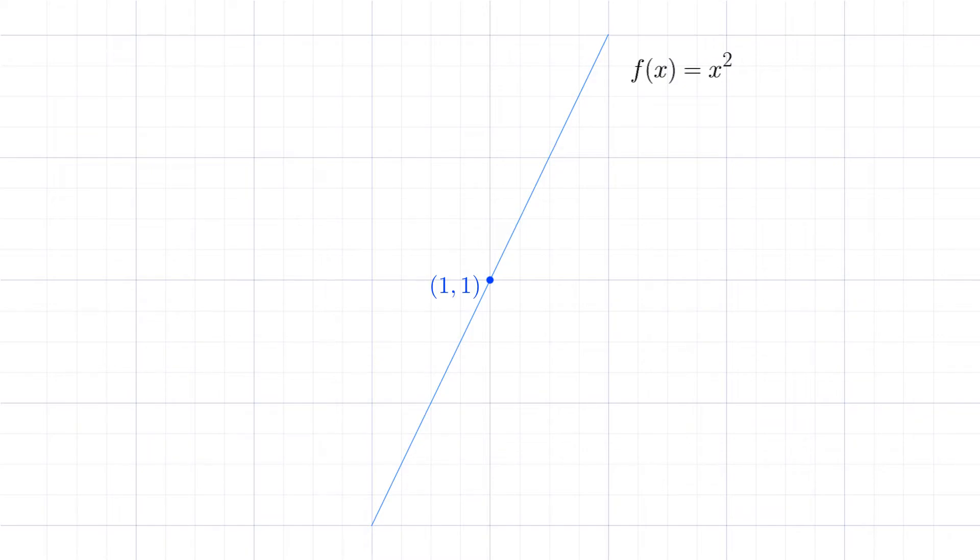Technically, the slope is only exactly flat when we zoom in infinitely far, so we'll want to use the closest possible nearby point. That point will be approximately zero horizontal distance from the first point, but it's technically a non-zero distance away since it's a separate point. Let's call that distance h.